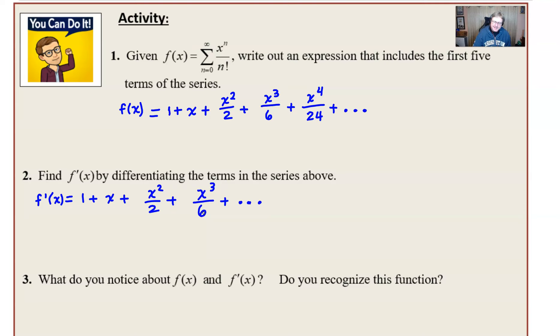What do you notice about f and f prime? Hopefully it's pretty clear that they're the same, and that's pretty powerful. Do you recognize what function does that? What function will allow you to take its derivative and it's the same? There's really two that do that - one would apply to this particular problem. That function is e to the x. The other one is 0. But e to the x is the only one that's significant, and for whatever it's worth, this is the power series, the Maclaurin series, the Taylor series centered at 0 - all of those are the same thing for the function e to the x.